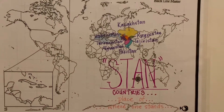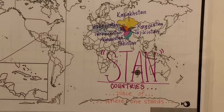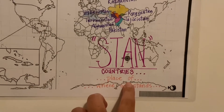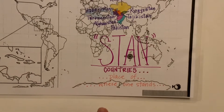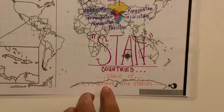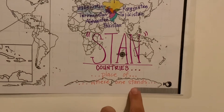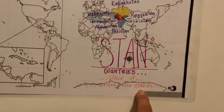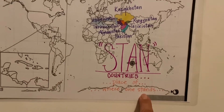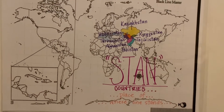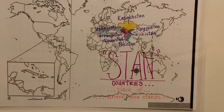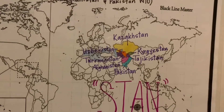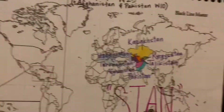I was really curious — what does Stan mean? These are the Stan countries. Well, Stan means 'place of,' but it literally translates to 'where one stands.' Where one stands. I think that is really cool. So this is 'place of,' 'where one is from,' 'where one stands' — that's what it literally translates to. Kind of cool.